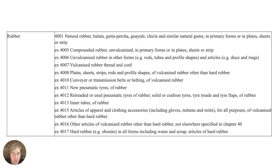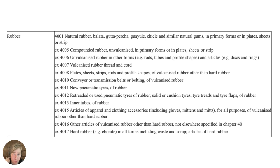Moving on to rubber, you can see a variety of different rubber products. They specifically mention articles of apparel, clothing accessories including gloves and mittens for all purposes of vulcanized rubber other than hard rubber. As you can see, there are a lot of consumer goods that could be affected in the future by the EUDR.